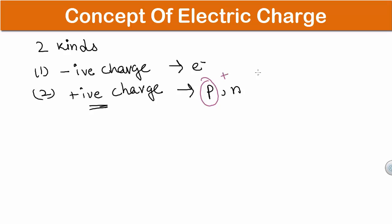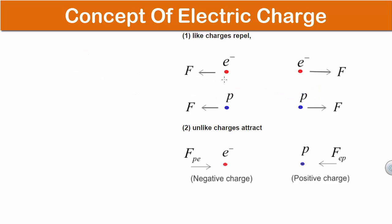Now the electric force between two electrons is same as the electric force between two protons which are kept at same distance from each other. And this electric force which acts between two electrons and two protons is repulsive in nature. So we can say that like charges repulse each other.